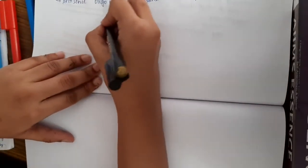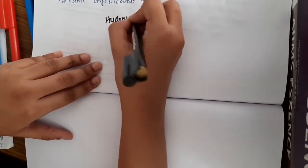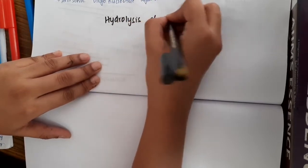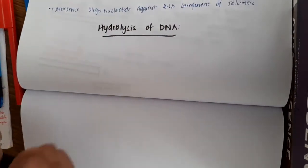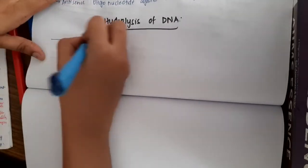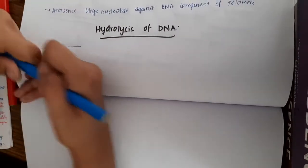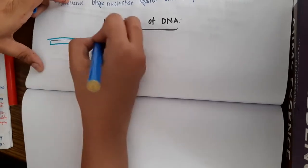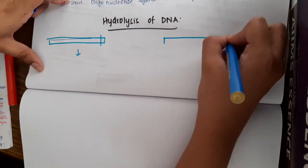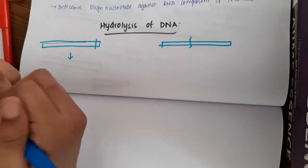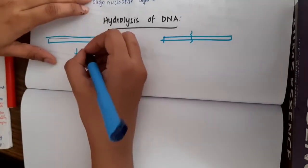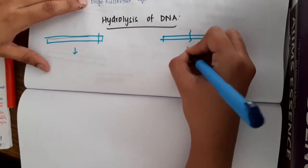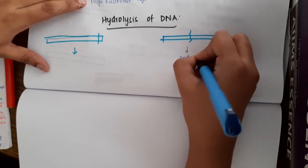Hello friends, let us now learn some important points about hydrolysis of DNA. Those enzymes which hydrolyze the DNA molecules from the ends are called as exonuclease, and those which hydrolyze the internal phosphodiester bonds are called as endonuclease.